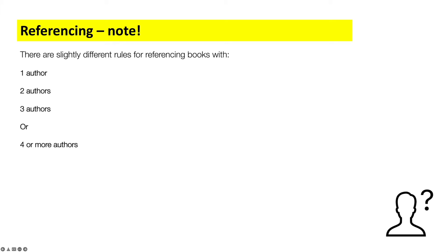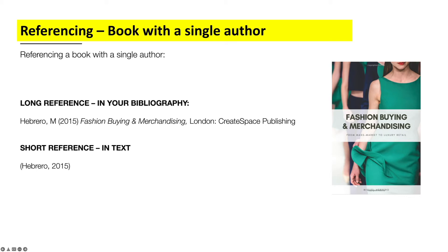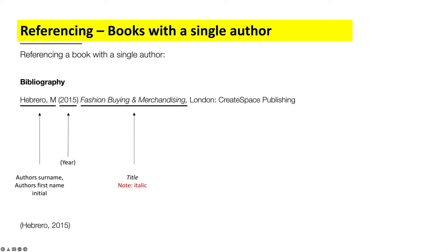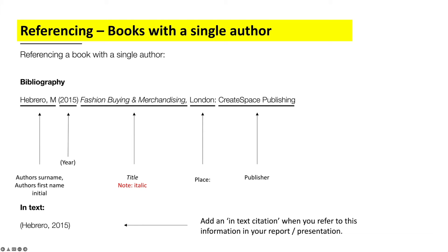How to reference quotes from books. There are slightly different rules for books with one, two, three, or four or more authors. For a book with one author, the long reference starts with the author's surname followed by a comma and their first initial, then the year in brackets, then the title of the book in italic text — this is where most students go wrong, forgetting the italic. Then a comma, the place of publication with a colon, and finally the publisher. The in-text short reference is just the author's surname, comma, and year, all in brackets.